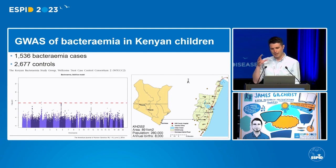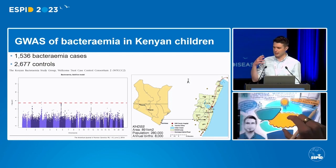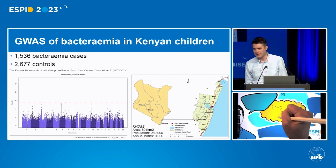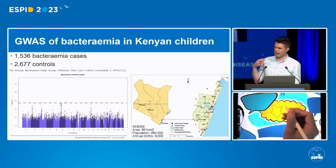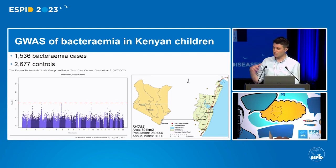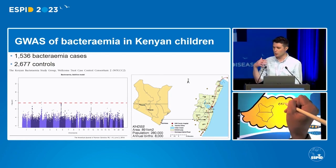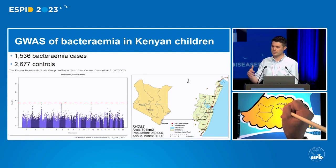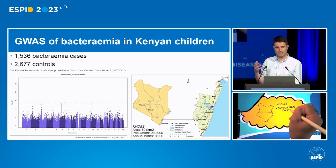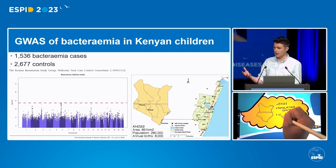If you want to define the human genetic components with any trait in a large population, the experiment that you do is a genome-wide association study, or a GWAS. This is what we did for bacteremia in Kenyan children in Kilifi in Adrian Hill's group in about 2016. The way that you perform any GWAS is to take bacteremia cases and population controls, genotype all of those samples for single nucleotide polymorphisms — single base pair changes, or SNPs — and then correlate genotype with the outcome you're interested in, in our case bacteremia.